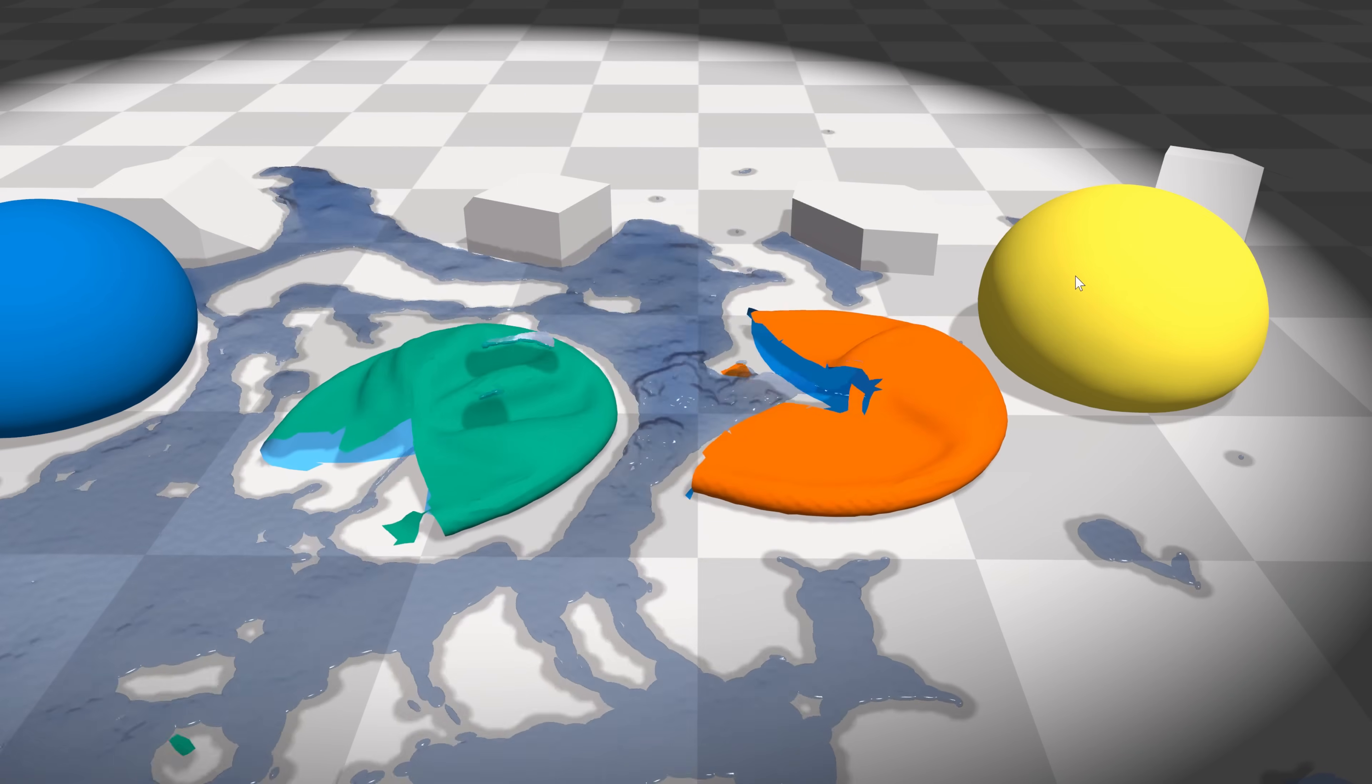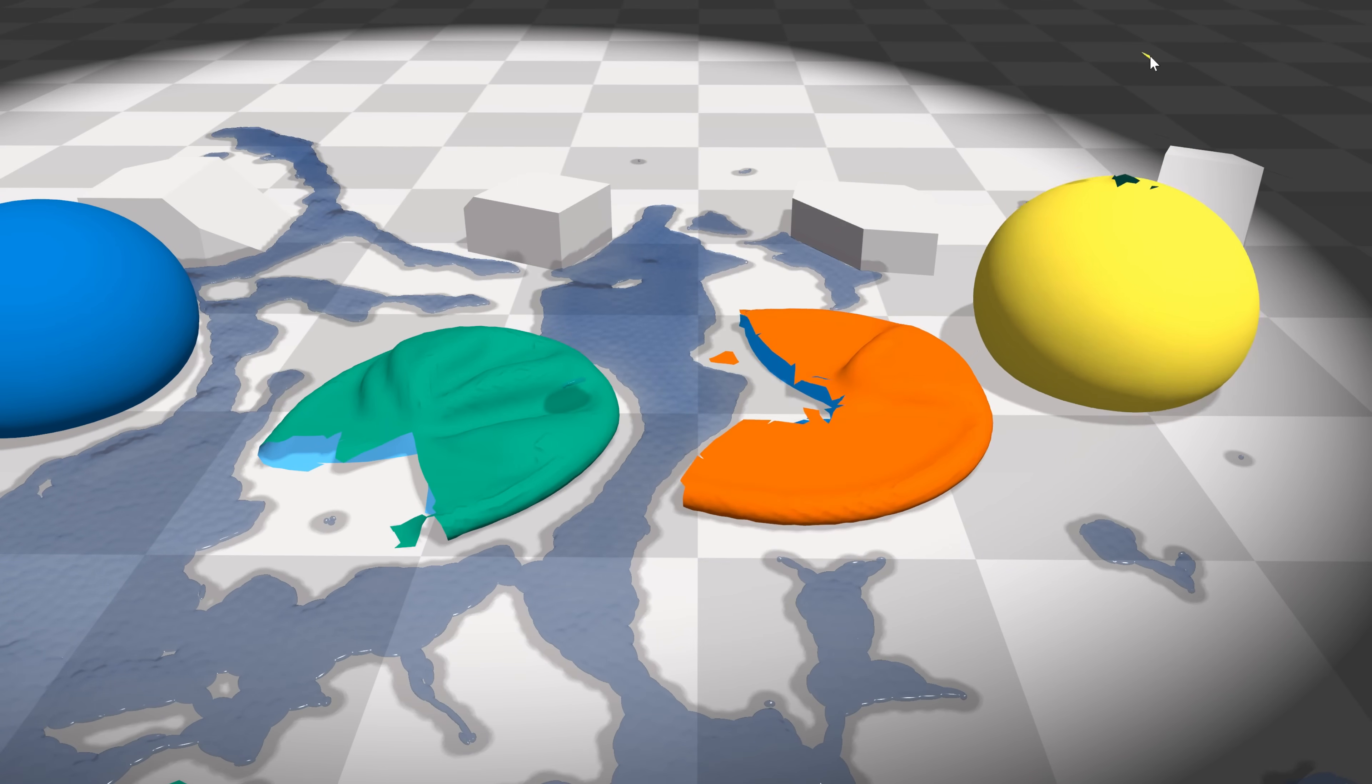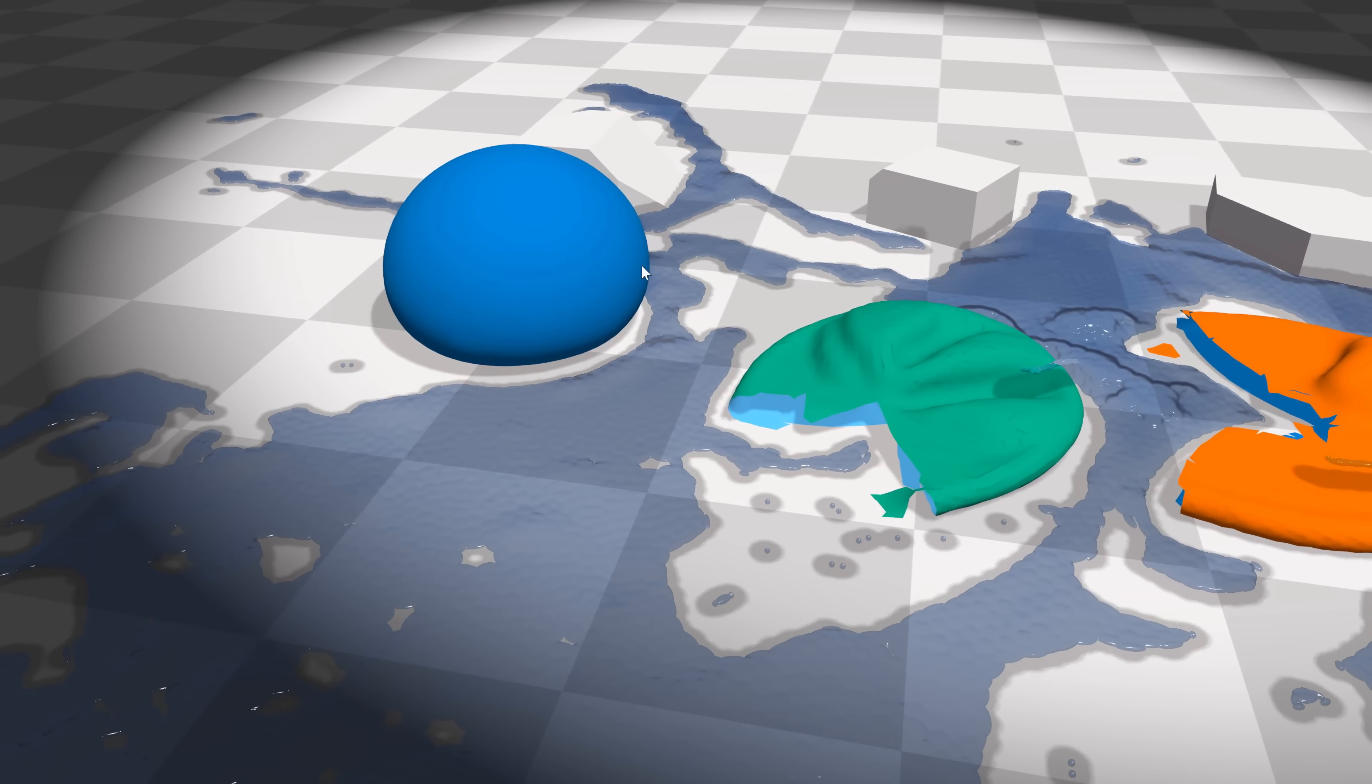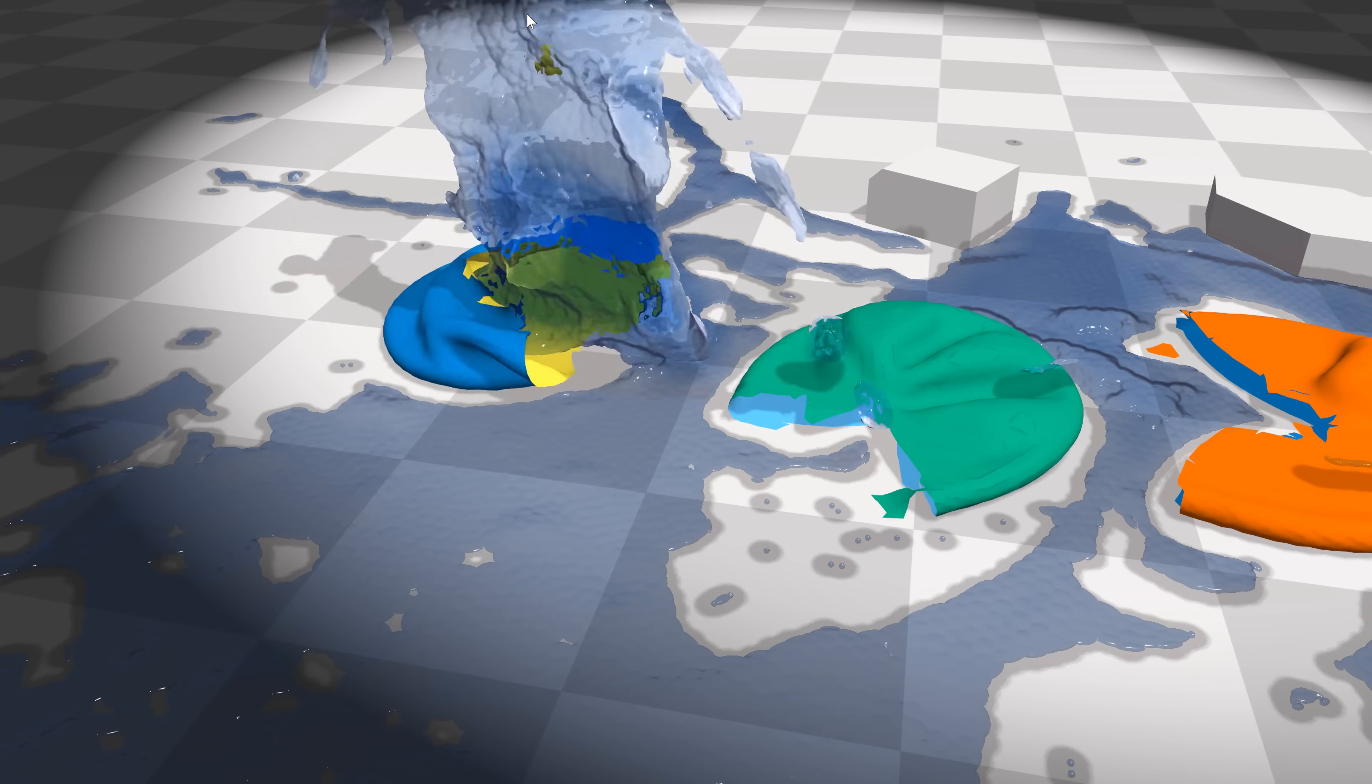I can't even fathom the complexity of this simulation. How water doesn't just break out or glitch through the membrane, and when the tears do appear, how the water seems to be forced out of it like a jet.